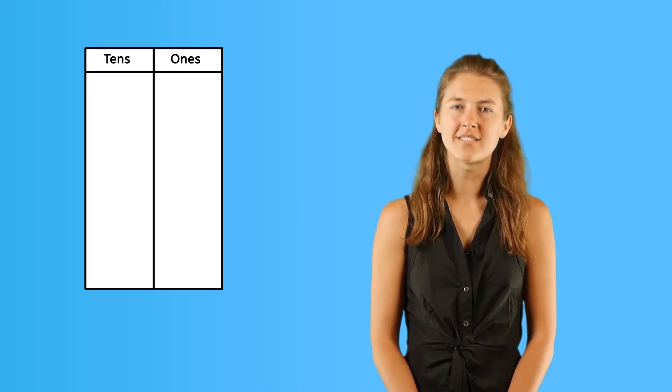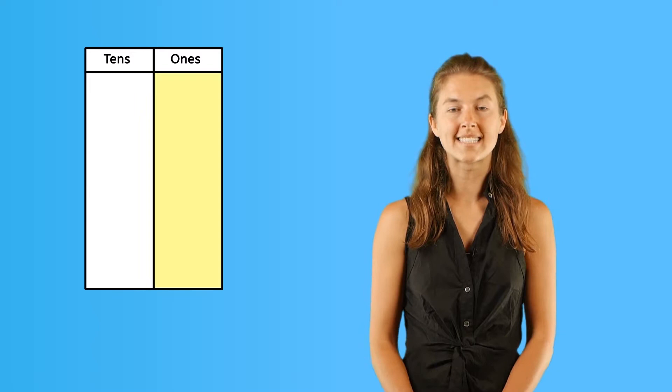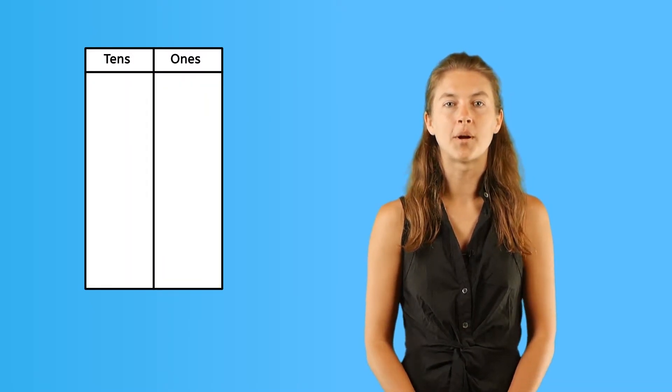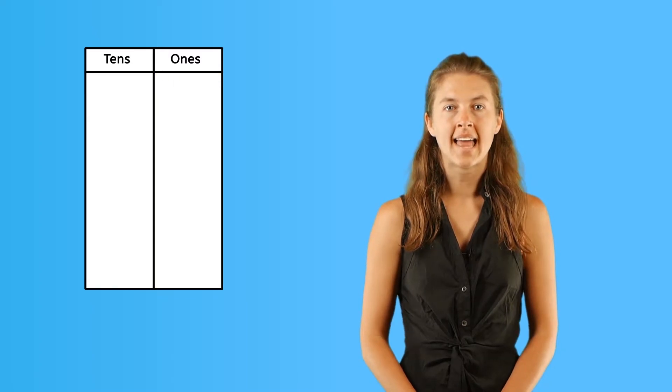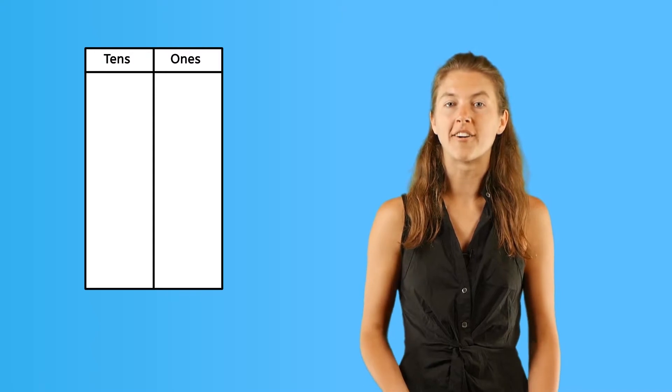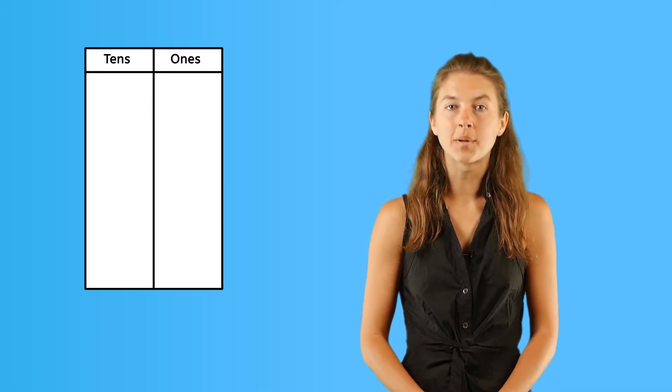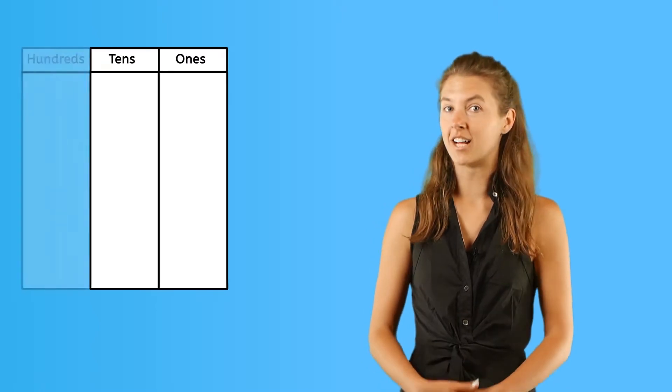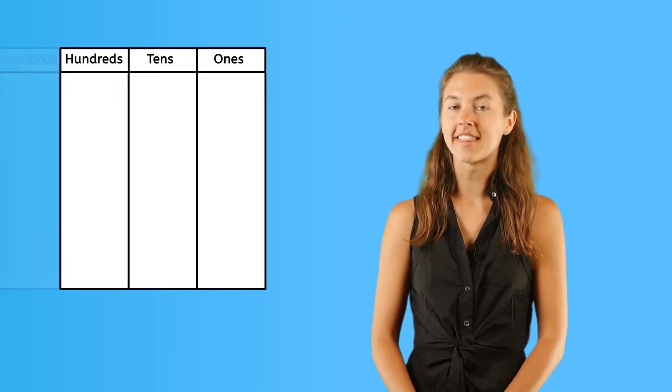Remember, when looking at place value, we work from the right side to the left side. From video 1, you'll remember we have the ones place and the tens place. But since numbers are infinite or go on forever, there are other places in the place value chart. Here is the hundreds place and the thousands place.